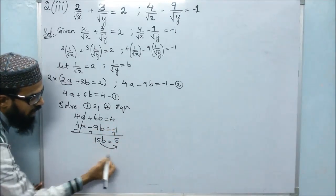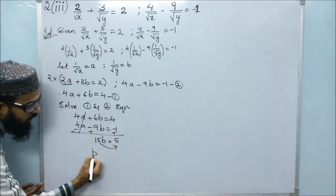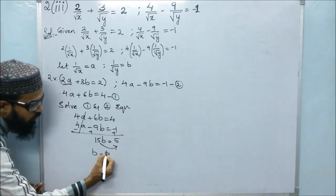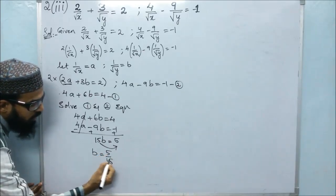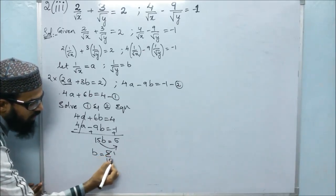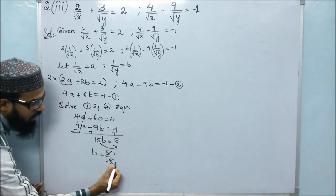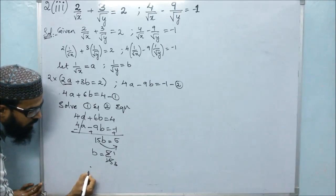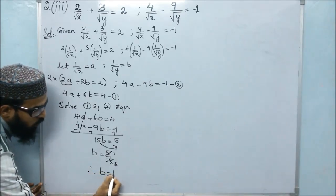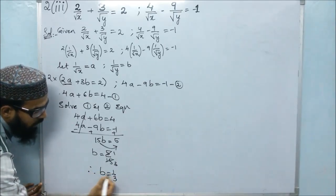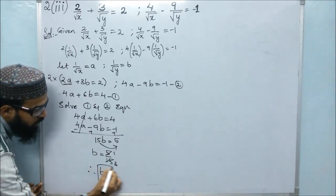15 goes to the denominator, so B is equals to 5 by 15. Simplifying, therefore B is equals to 1 by 3.